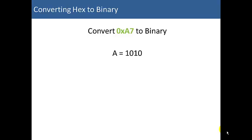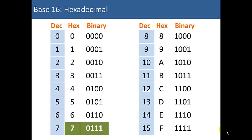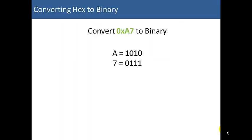Now, we're going to look up the 7 on the same table. The 7 is equivalent to 0111 in binary. Now, if we didn't want to look those up in the table, I'll show you a shortcut in a second, but 0xA7 is equal to 10100111 binary. So, this was a pretty simple conversion using the table. It only took a matter of seconds.